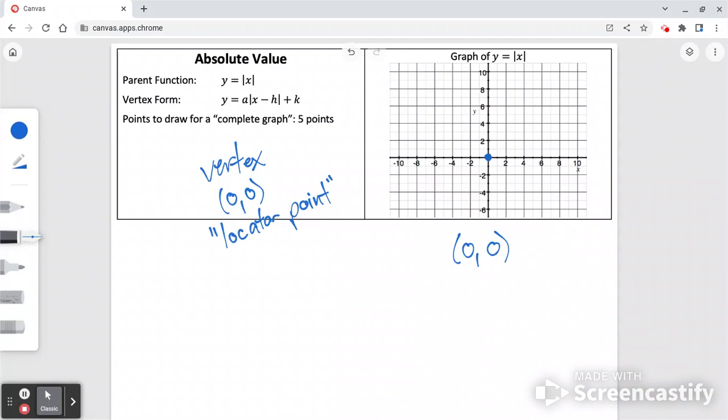To find other points, we have a point where x is 0. Let's find 1 at 1 and at 2. And just because absolute value is a little bit funny, we're going to go negative 1 and negative 2 also. Once you see what the parent function looks like, you'll just know where those points are, and you don't have to re-figure it out every time.